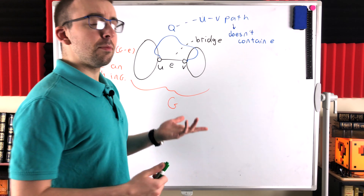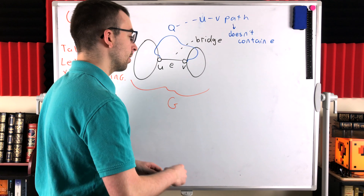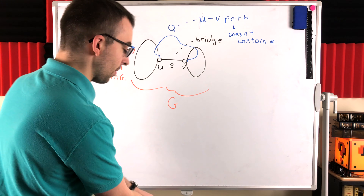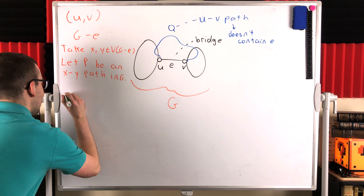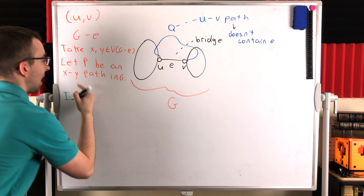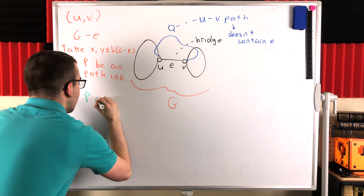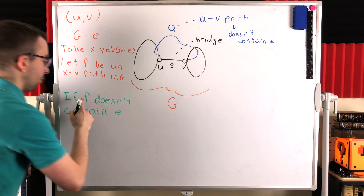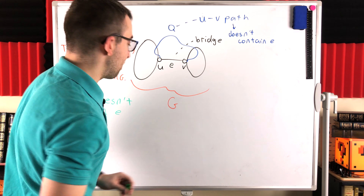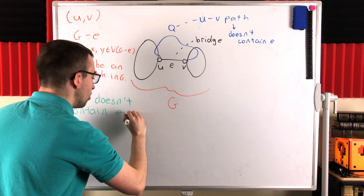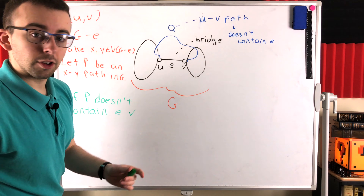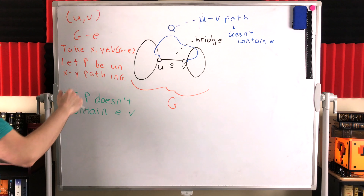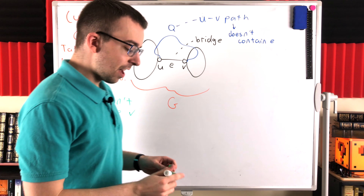First possibility: suppose P does not contain E. If P doesn't contain E, then P still exists in G minus E. Thus, X and Y are certainly connected in G minus E because this path connecting them still exists.